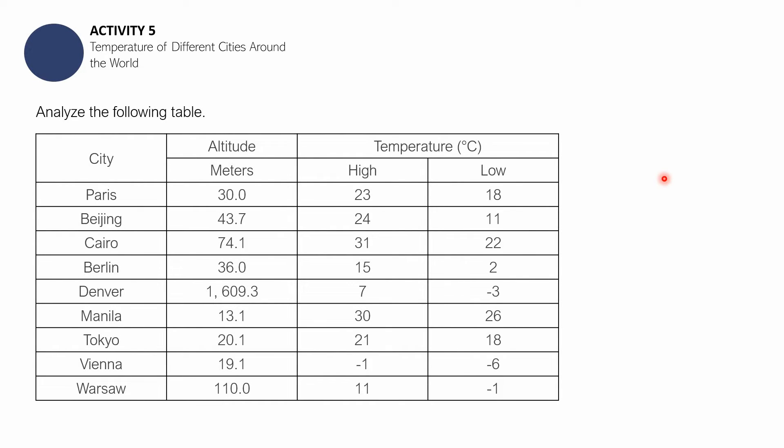The first thing you need to do is to analyze the following table. The first column is the city, the second column is the altitude in meters of these cities above sea level. Manila is only 13.1 above sea level. In terms of temperature, Manila's average high is 30 degrees Celsius, whereas its average low is 26 degrees Celsius. It's a lot colder in Berlin, 15 and 2, and so much colder in Warsaw, 11 and negative 1. I'll give you a moment to analyze this table for yourselves.